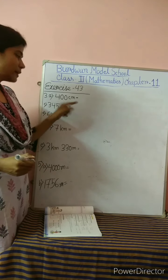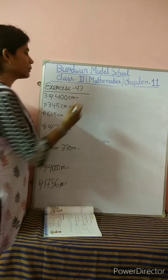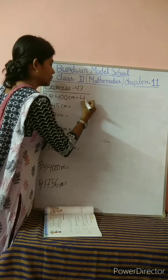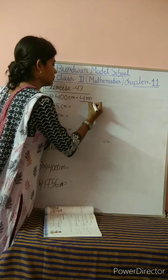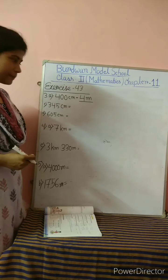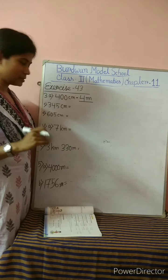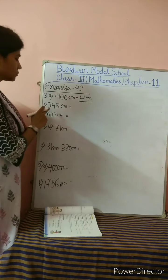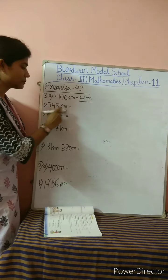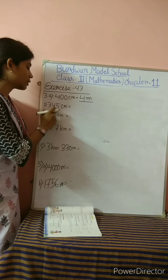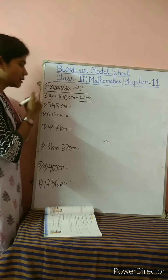Hello students, today we will do numbers 3, 4, and 5 of exercise number 42. Open your composite book and copy. The page number is 179.